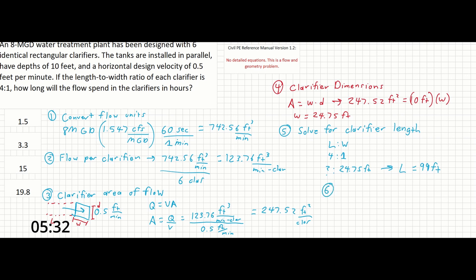Which finally means all we have to do now is calculate the time. Time T is going to be given as the length over the velocity. So if the length is 99 feet at a velocity of 0.5 feet per minute,